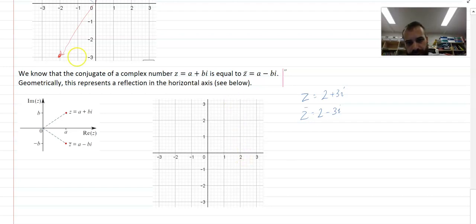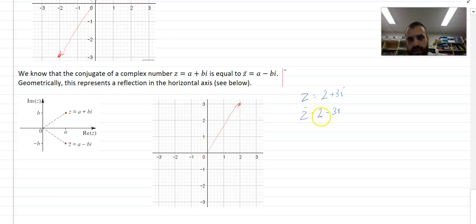2 plus 3i. 2 minus 3i. And you can see we're reflecting over the x-axis. And it's pretty easy to see why the imaginary component goes from being positive to being negative or vice versa.